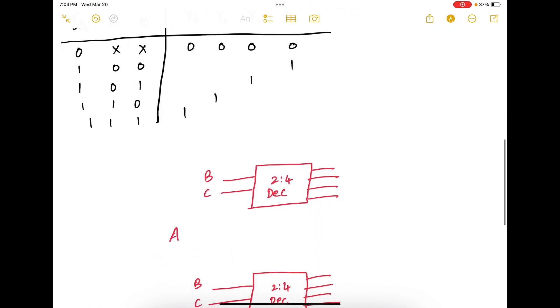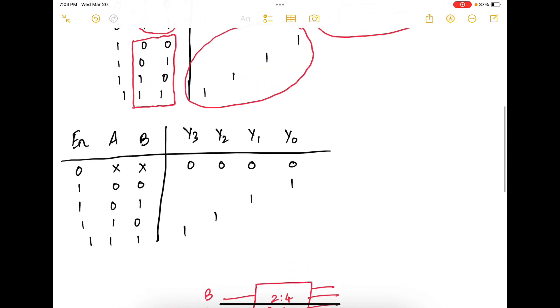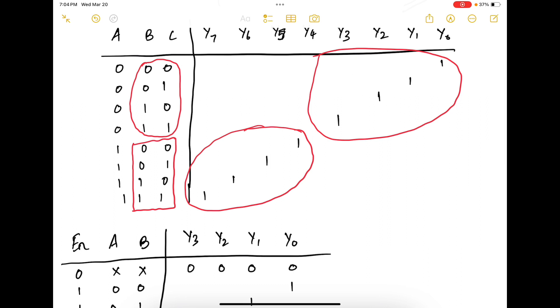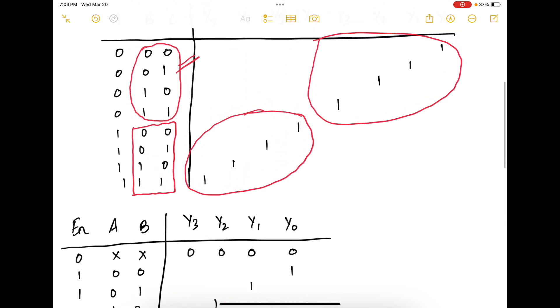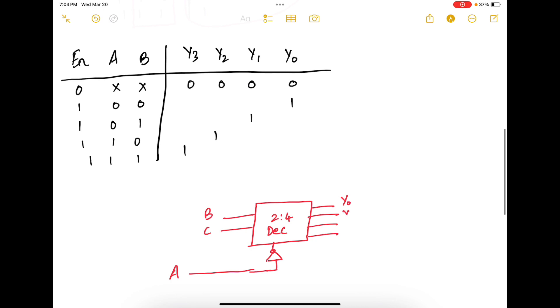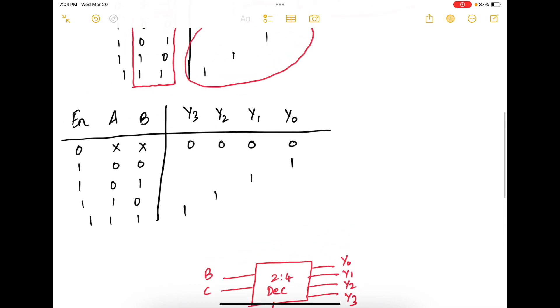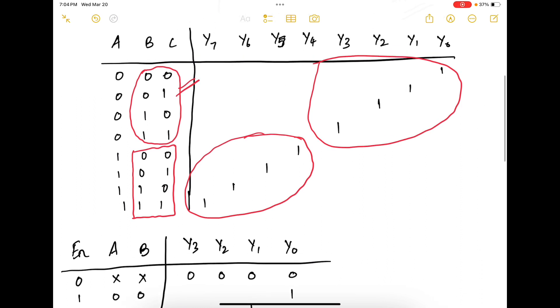So if A is my enable signal, when A is 0, I can enable this decoder on top. So I need to NOT it. And that would give me control over Y0 to Y3. So Y0, Y1, Y2 and Y3.